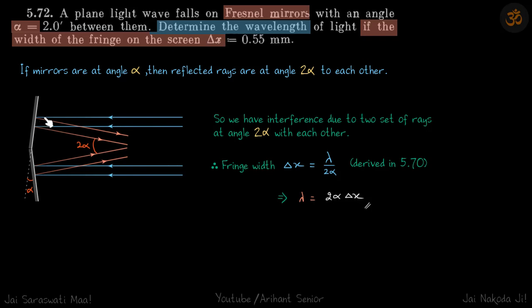What is the angle between these reflected rays? If mirrors are at an angle alpha, then reflected rays are at an angle 2 alpha to each other. From simple geometry, you can draw and figure out this relationship.